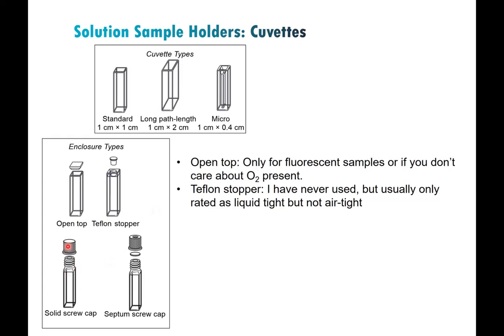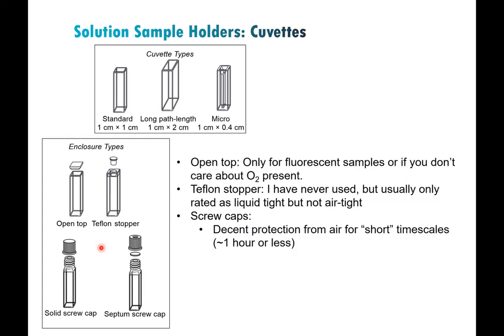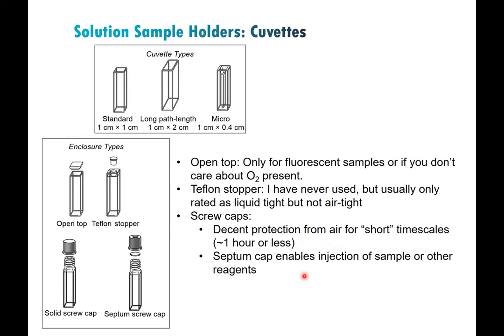Since we mostly work with phosphorescent compounds, we use airtight cuvettes. Screw caps offer pretty decent protection from air for short periods — an hour or less is probably the time scale you're thinking about, though it varies by sample. The advantage of the septum cap, which we often use, is that you can inject the sample for a serial dilution, or inject other things like air or reagents if you're doing a quenching experiment where you want to vary concentration as you're doing the measurement.